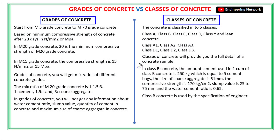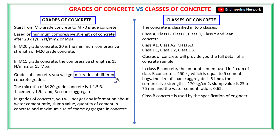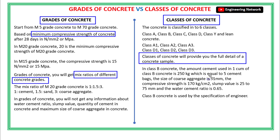The main difference between grades of concrete and classes of concrete is that grades of concrete are designed or made based on the compressive strength and mix ratios of concrete, while in classes of concrete you will get the detailed information about a specific concrete sample.